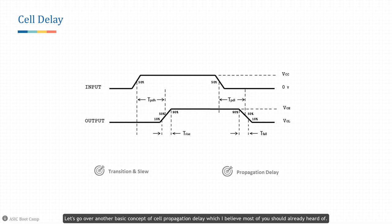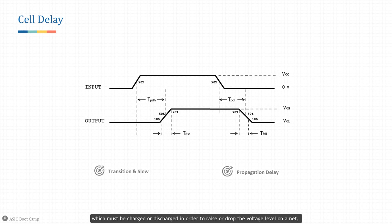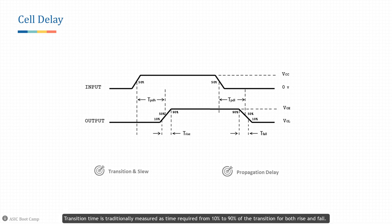Let's go over the basic concept of cell propagation delay. Due to capacitive loading from the parasitics on the wire, which must be charged or discharged to raise or drop the voltage level on a net, there will be a finite time for the signal to transition. That is where the rise and fall transition or slew rate comes from. Transition time is traditionally measured as the time required from 10% to 90% of the transition for both rise and fall.